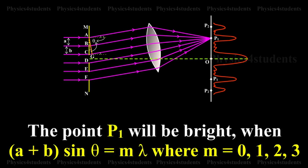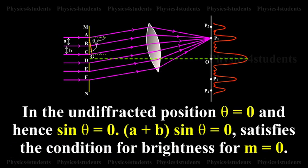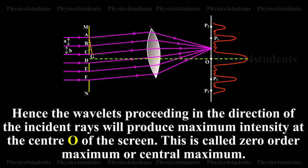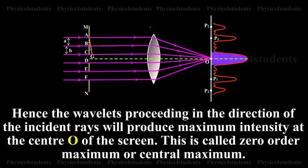The point P1 will be bright when A plus B into sin theta equals M into lambda where M equals 0, 1, 2, 3. In the undiffracted position, theta equals 0 and hence sin theta equals 0. A plus B into sin theta equals 0 satisfies the condition of brightness for M equals 0. Hence, the wavelets proceeding in the direction of the incident rays will produce maximum intensity at the center O of the screen. This is called zero order maximum or central maximum.